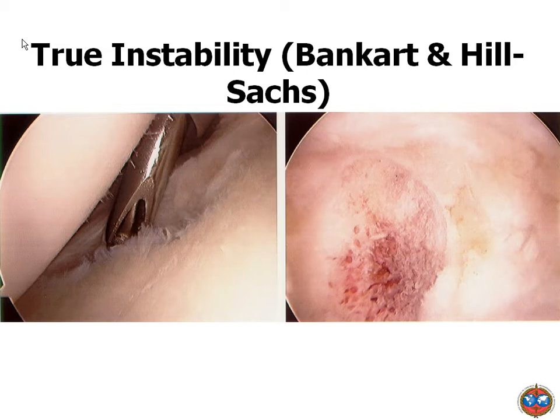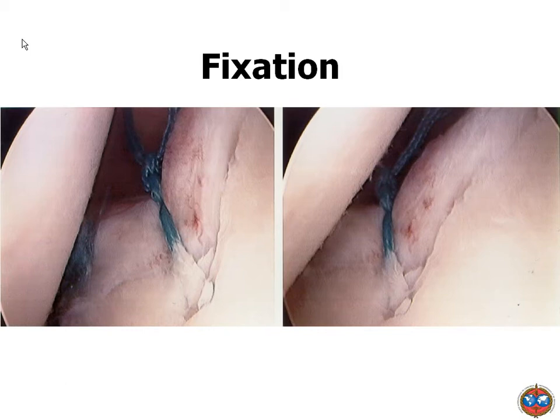This is a true instability with a Hill-Sachs lesion — the type we see regularly in a sports person. This is a shoulder that never had more trauma than a dislocation; we can see very nicely the gap in the bone. Sometimes this gap is very big, and if dislocations are very frequent we should think about doing more repair, sometimes filling the bone with subscapularis, which is more advanced. The fixation can be done very nicely with anchors and sutures, and we can test with a probe that the ligament is back to the bone.